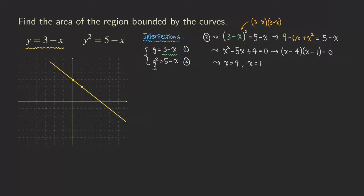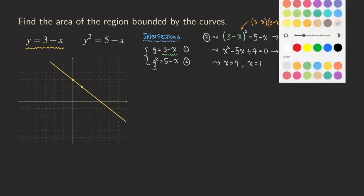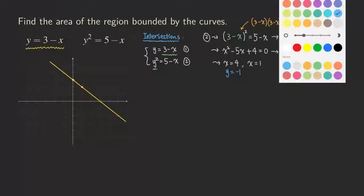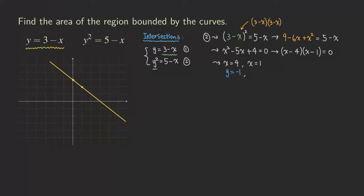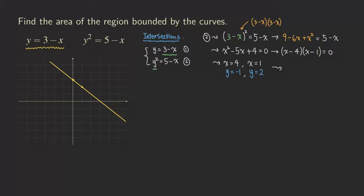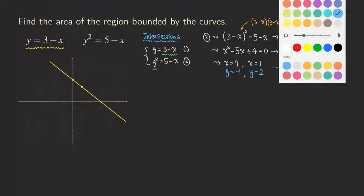Those are only the x-values — we also need the y-values. We plug them back into equation one since it's simpler. Plugging x = 4: y = 3 − 4 = negative 1. Plugging x = 1: y = 3 − 1 = 2. So the two intersection points are (4, −1) and (1, 2).